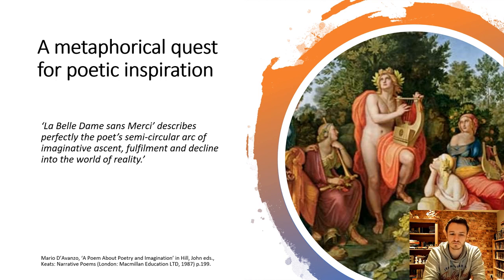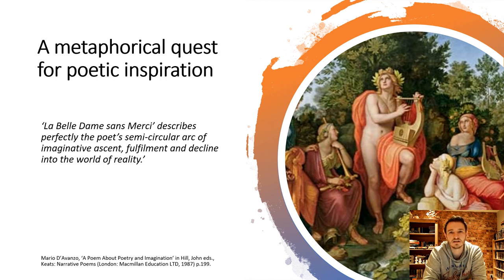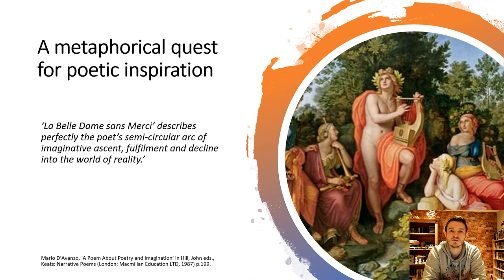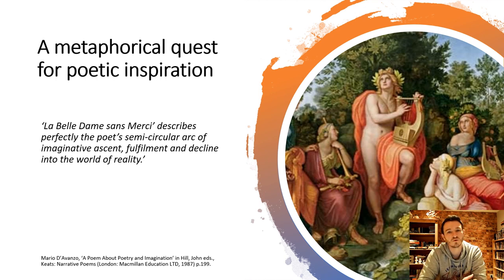If you look at the words of Mario D'Avanzo, the suggestion is that La Belle Dame Sans Merci describes perfectly the poet's semi-circular arc of imaginative ascent, fulfilment, and decline into the world of reality. At the beginning, the knight at arms is palely loitering — lost in a world of inactivity with no inspiration. What comes along is a moment of spark that creates the ability to write. So we begin in a place of desolation, and through creativity we are able to transcend and create something beautiful. However, what is normally avoided is the descent that comes afterwards: if we go up, we must come down. So we see a poet who at the beginning cannot do anything, and now we've reached the point where that beginning of creation has happened.